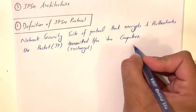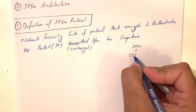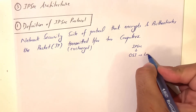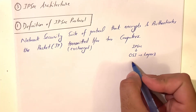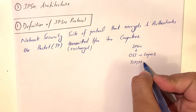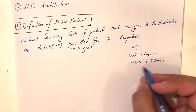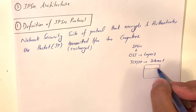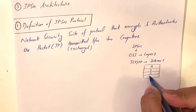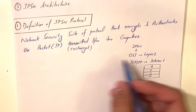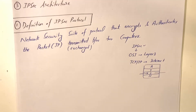If you look at the OSI model, this protocol operates on layer three, which is basically the network layer. On the TCP/IP protocol, it operates on the internet layer — where we have application layer, then transport layer, then internet layer, then the network layer. So IPsec runs on this internet layer of the TCP/IP protocol.